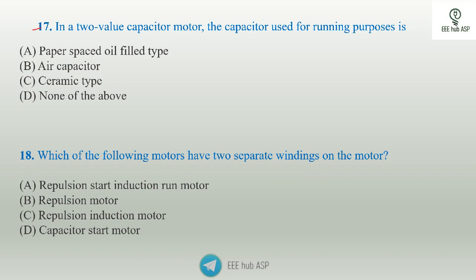Two value capacitor motor: one capacitor is used for starting and another for running purposes. This is the capacitor start-capacitor run motor. In the two value capacitor motor, two capacitors are used — one for starting winding and one for running purposes.